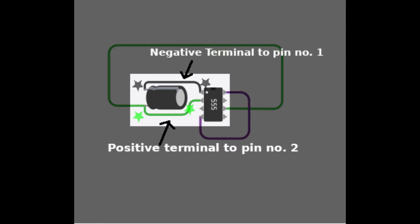Take the 10uF capacitor and the 555 IC. Connect the negative terminal of the capacitor to pin number 1 of the 555 IC, and connect the positive terminal of the capacitor to pin number 2 of the IC.